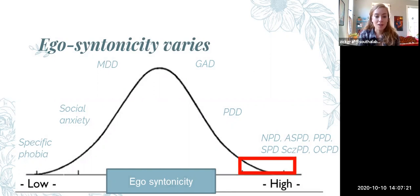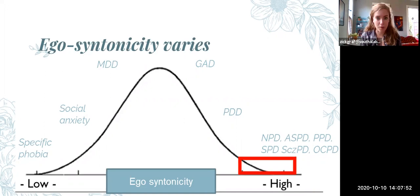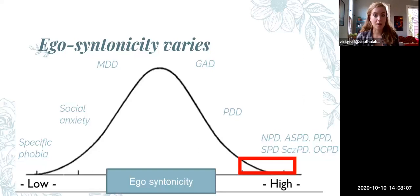Egosyntonicity exists on a spectrum, and we can put the disorders we've already talked about along this spectrum — though of course it's different for everyone. An example of a disorder that's low in egosyntonicity on average is specific phobia. People with specific phobias have lots of opportunities to observe big differences in their behavior and inner experiences when going about their normal life versus when confronted with their phobic object or situation. Because by definition, specific phobias are circumscribed — they focus only on a certain narrow context and don't affect the rest of a person's life very much — they tend to be really egodystonic.